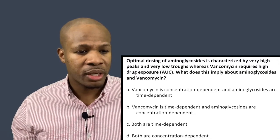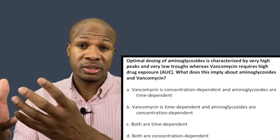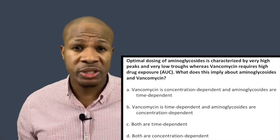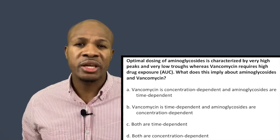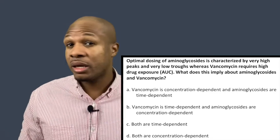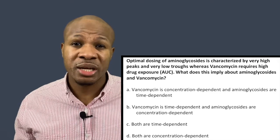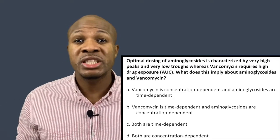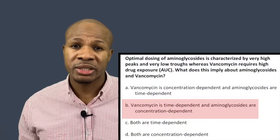Answer choice B says vancomycin is time dependent and aminoglycosides are concentration dependent — this makes sense. Aminoglycosides work best with very high peaks, meaning high concentration. Vancomycin works best with a high AUC, which is a combination of average drug concentration and the amount of time the drug spends in the body. Vancomycin is classified as time dependent because every drug depends on concentration to some extent, but for vancomycin there is a strong time component that impacts how well it treats the infection. So B is the correct answer.